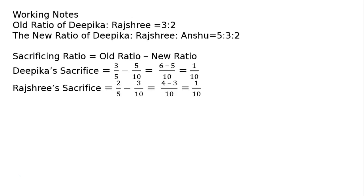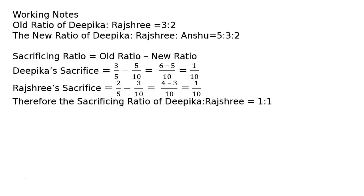Likewise, Rajshri's sacrifice is 2 by 5 minus 3 by 10. Taking LCM as 10, that is 4 minus 3, equal to 1 upon 10. Therefore, the sacrificing ratio of Deepika to Rajshri is equal to 1 is to 1.